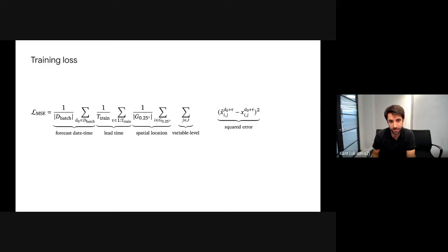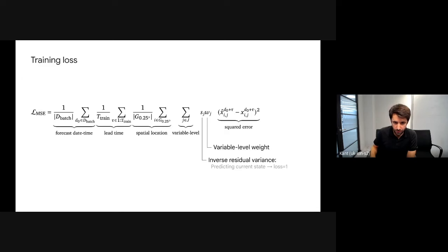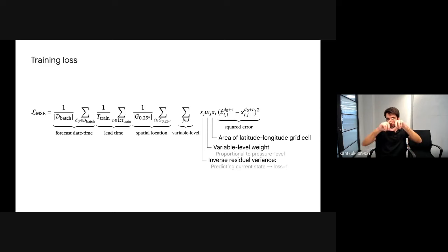We compensate so that predicting the present state gives a loss of one for all variables. We give different weights to different atmospheric levels because lower levels matter more to humans and have higher air density. We also compensate for the grid having more points near the poles than the equator.